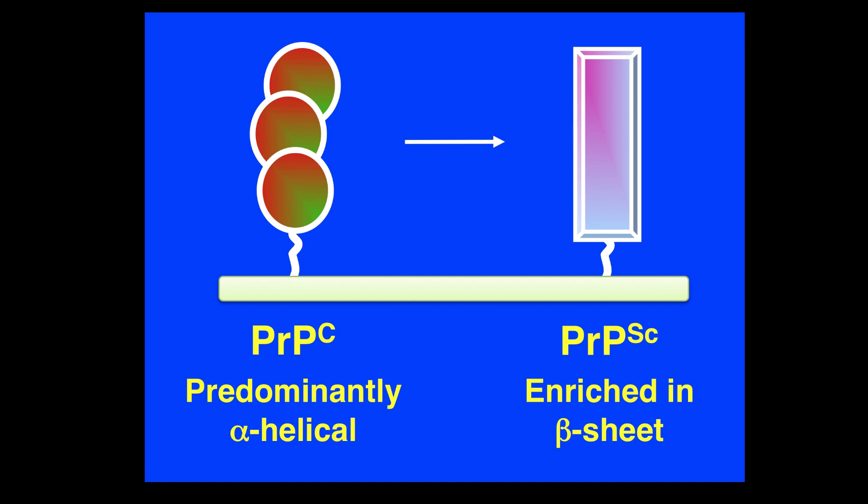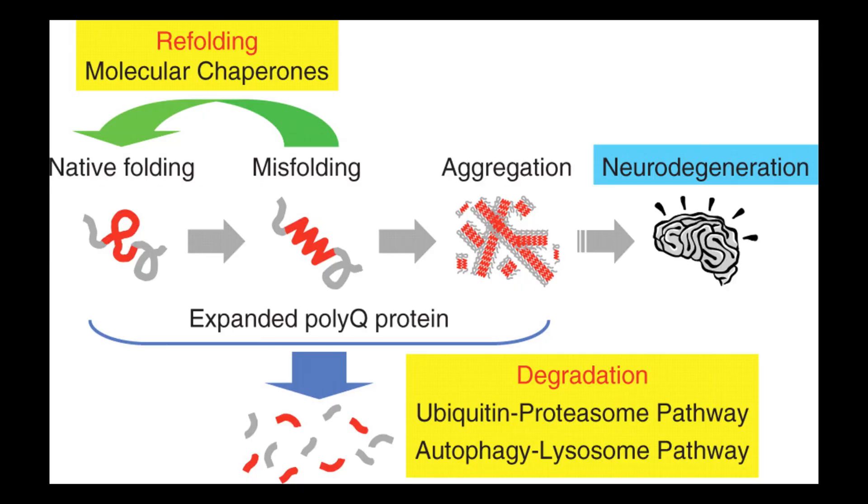So how is the prion protein actually infectious? Well, it has a neat little trick: it can change the shape of other healthy prion proteins into the infectious form. This means it can start off a chain reaction — changing one protein into the infectious structure, which will then go along and change another prion protein into the infectious structure too. Incidentally, the prion protein in its infectious form is also highly resistant to degradation by enzymes and by temperature, meaning it's quite hard to destroy, so if it gets in it's likely to stick around.